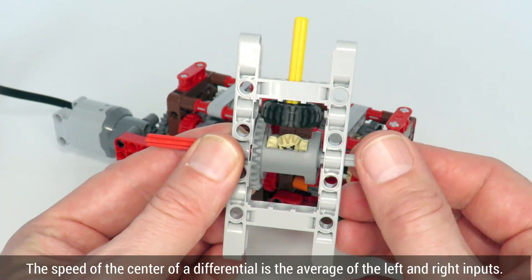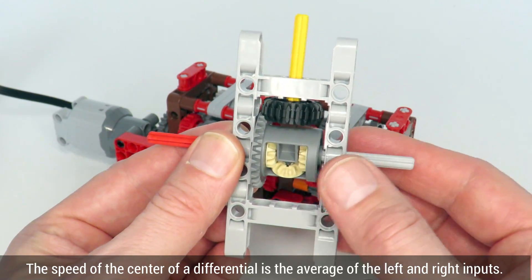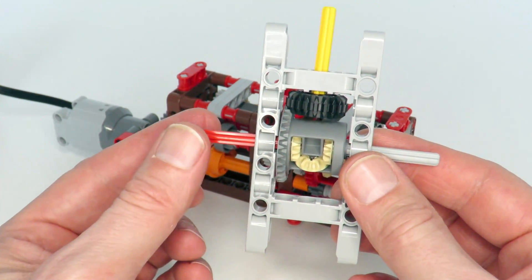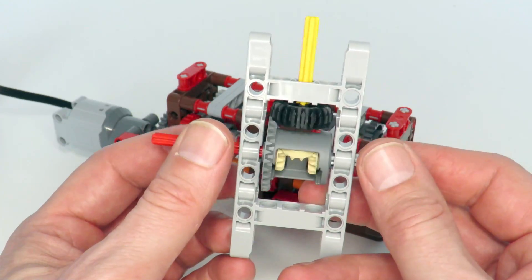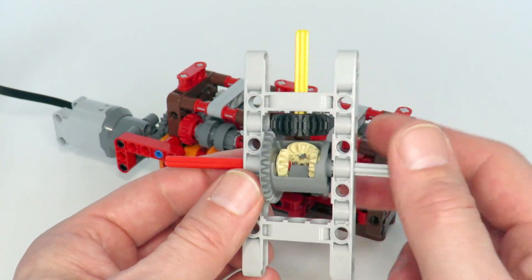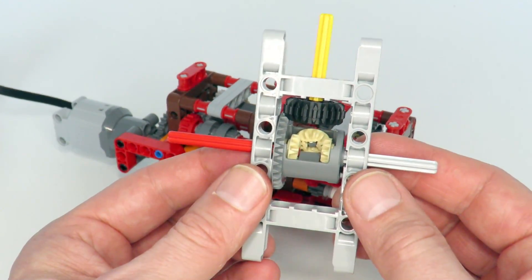So that would give us an output on the yellow axle on an average of zero and one, which is half. And then when we switch gears, it might go to speed one. And that would give us an average of the output of one as well. So that means the output switches between a half and one.